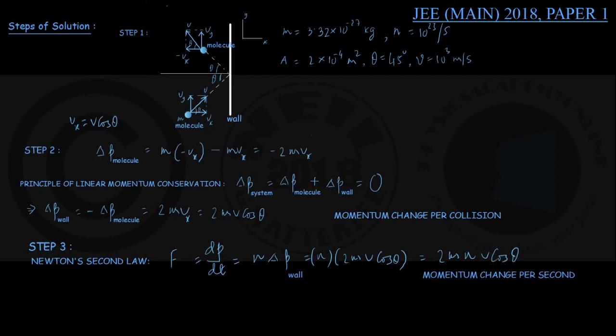Once you come so far, we can write in the next step - that is step number 4 - the pressure on the wall, capital P. We have used earlier small p for momentum; now use capital P for pressure. This pressure will be the force divided by area of the wall, and that is coming out to be 2mnV cos θ divided by area of the wall, that is A.